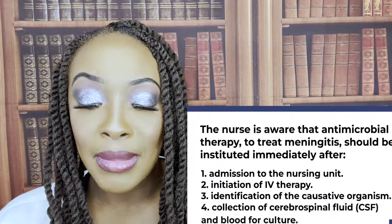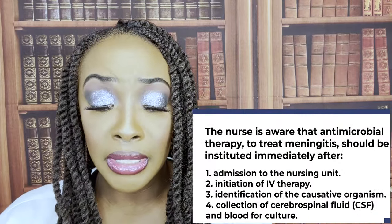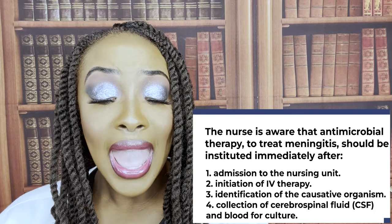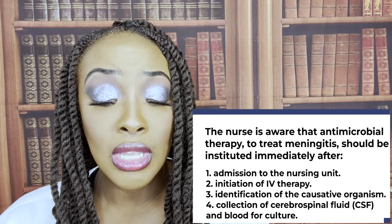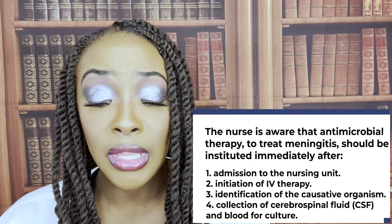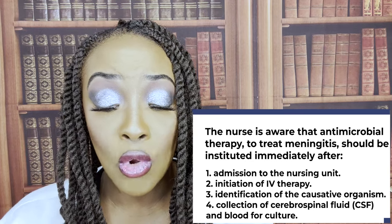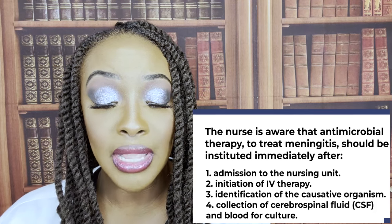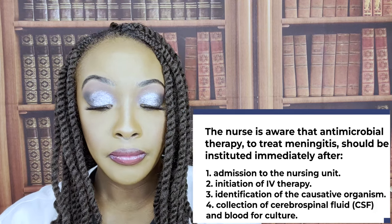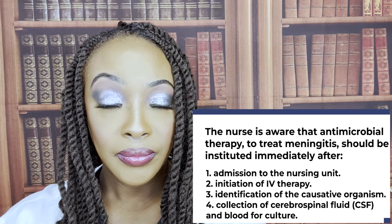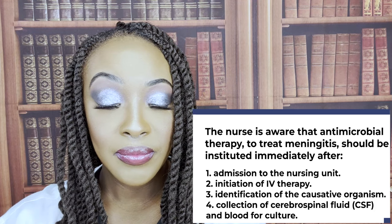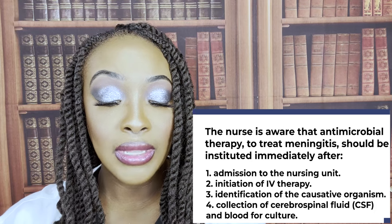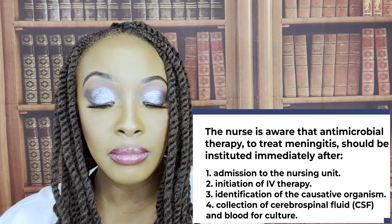The nurse is aware that antimicrobial therapy to treat meningitis should be instituted immediately after: one — admission to the nursing unit; two — initiation of IV therapy; three — identification of the causative organism; or four — collection of cerebrospinal fluid and blood for culture. The correct answer is four — collection of cerebrospinal fluid and blood for culture.